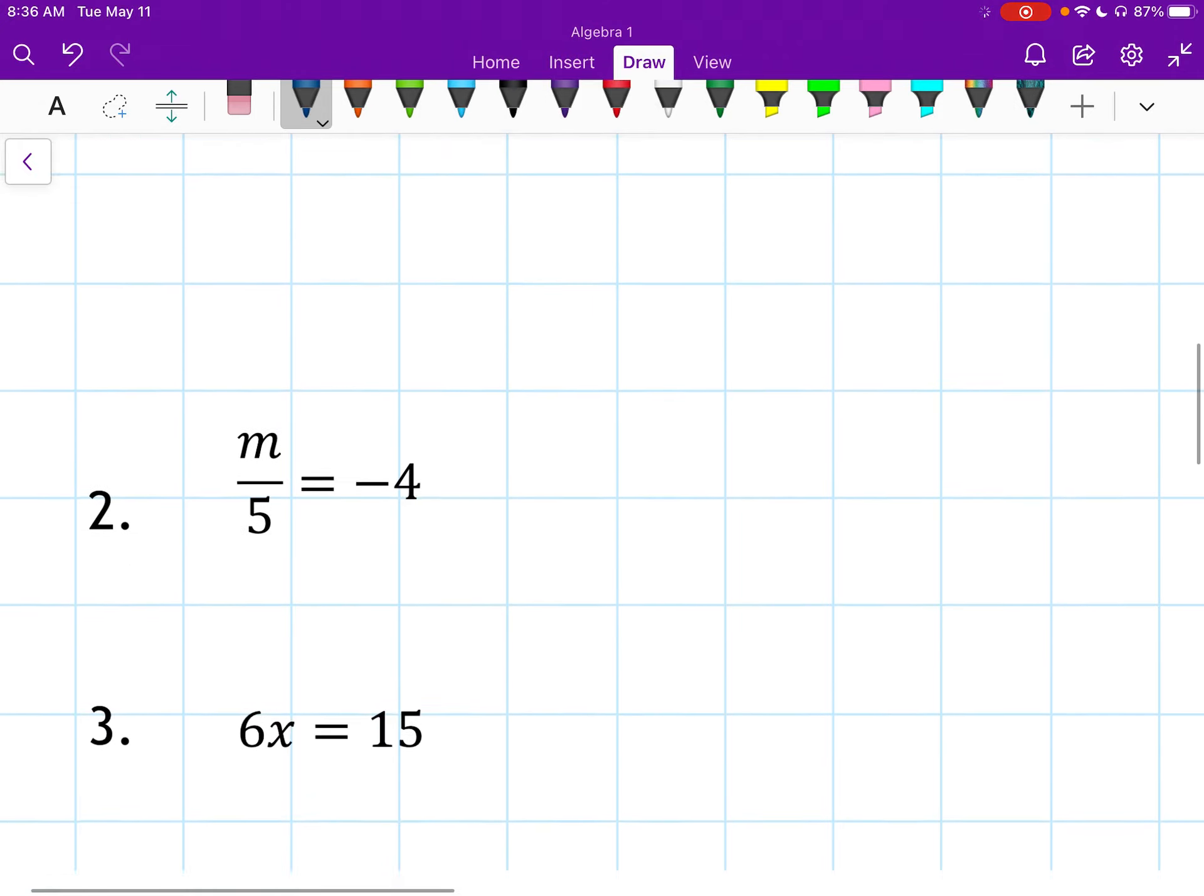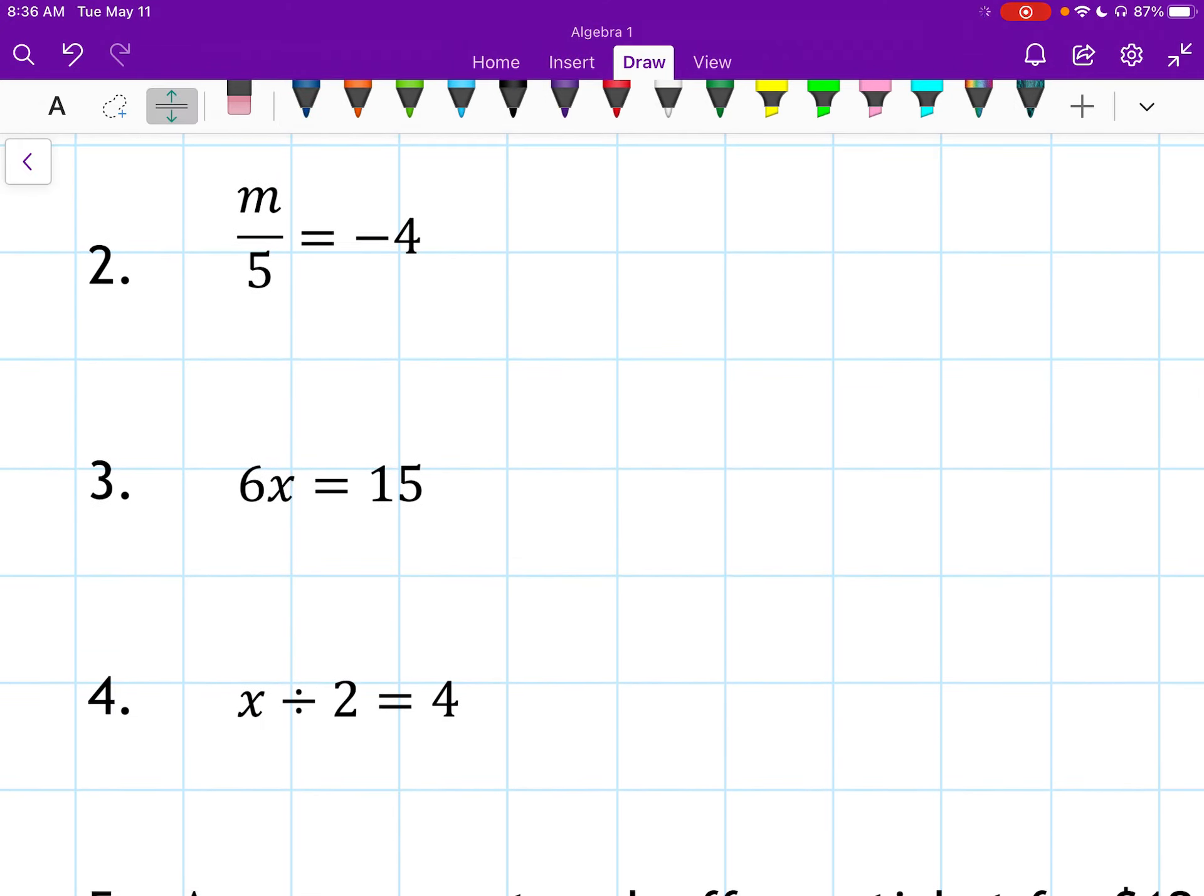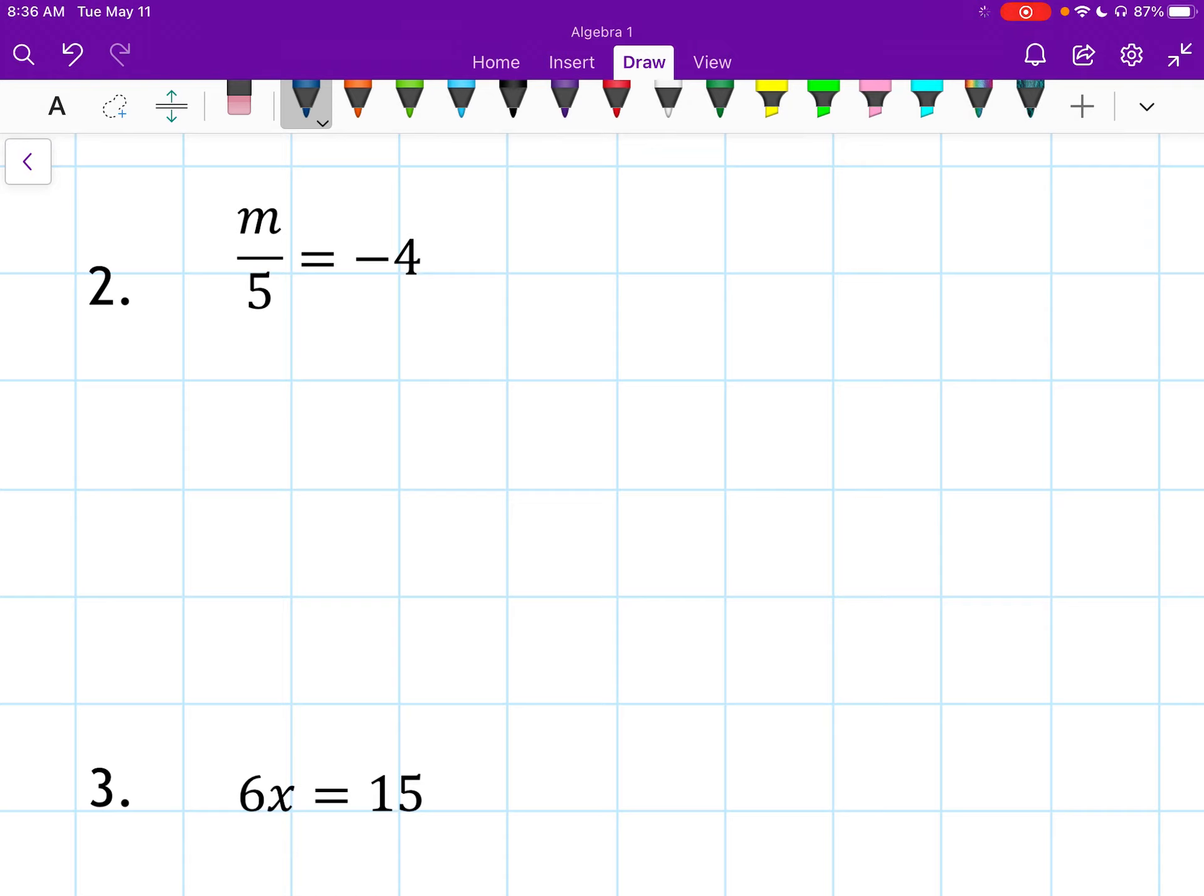Number 2. m over 5 is negative 4, equals negative 4. Well, it's m divided by 5. So to undo that division, we need to multiply by 5. We multiply by 5 on the left side and the right side. So our 5s will cancel, and I'm left with m equals what is negative 4 times 5? That will be negative 20.